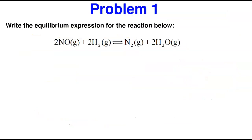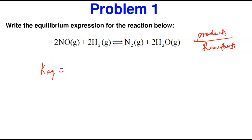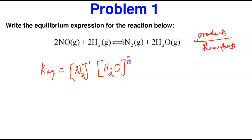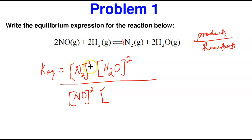Problem 1: write the equilibrium expression for the reaction below. Remember, it is the product over the reactant. The product N₂ has a coefficient of one, so it's N₂ raised to the power of one. Water has a coefficient of two, so it's H₂O raised to the power of two — divided by the reactants. NO has a coefficient of two, so NO is raised to the power of two, and H₂ has a coefficient of two. An important note: Keq is written without a unit.